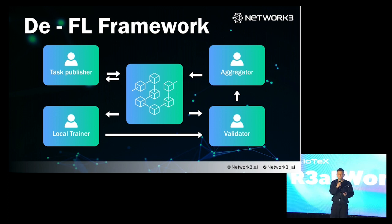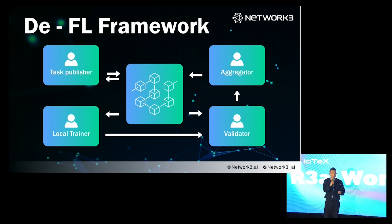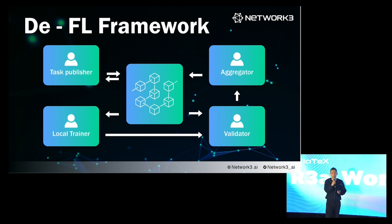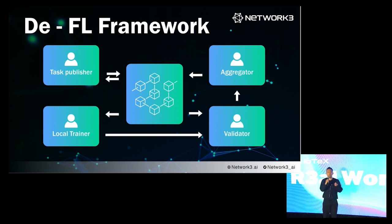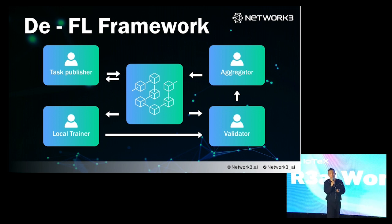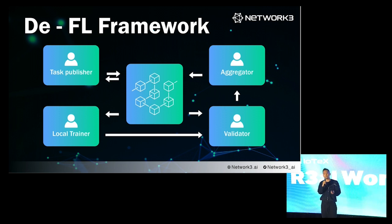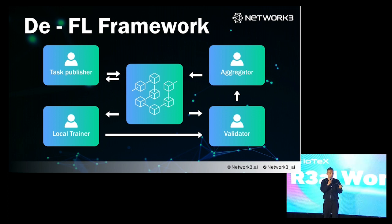This is our framework. There are several roles. Task publishers have demand and deploy a rough model on-chain. Local trainers leverage their local data and compute power to train. Validators validate the gradients. Aggregators average all the gradients and deploy them back to the blockchain — that's one cycle. After several cycles, the model is mature and deployed back to the publisher.